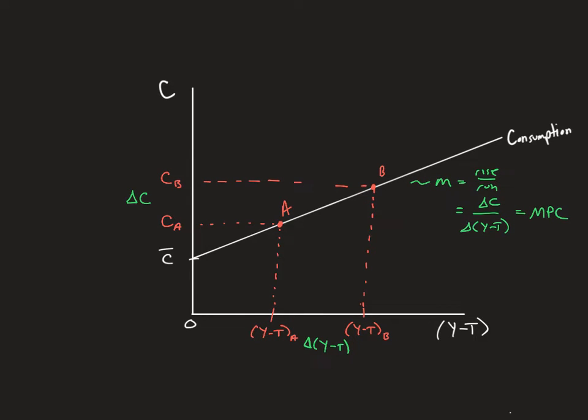So you see the marginal propensity to consume, we're going to say is constant, and it's always going to be between zero and one. And that's because it's going to be a percentage of additional income that goes towards consumption.